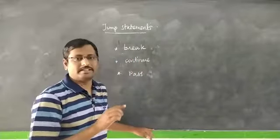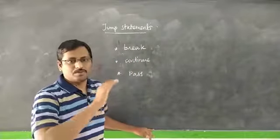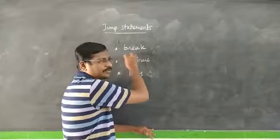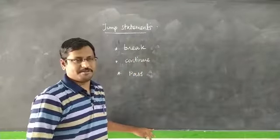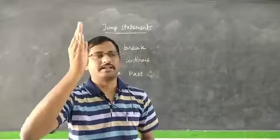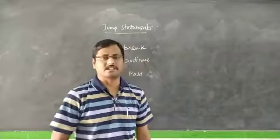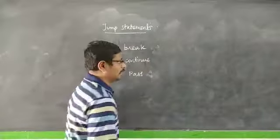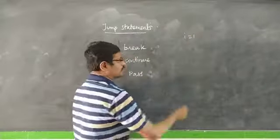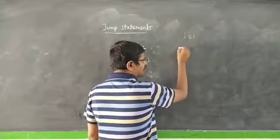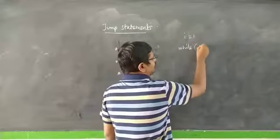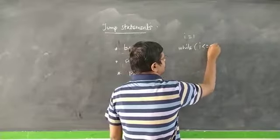So if you look at the loop, if you want to terminate the loop, you use the break statement. Let's look at an example. We will start with i equal to 1, and use a while loop: while i is less than or equal to 10.